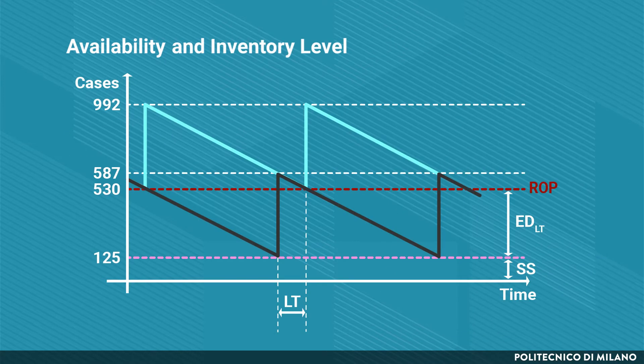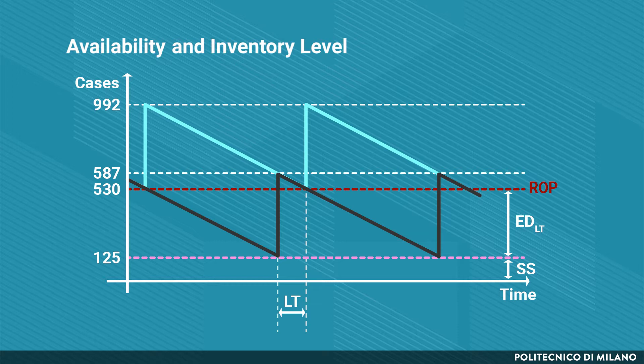This is the final graph that represents the patterns of both the availability and the inventory level. In addition to the maximum and minimum values of each curve, we can observe the replenishment lead time.